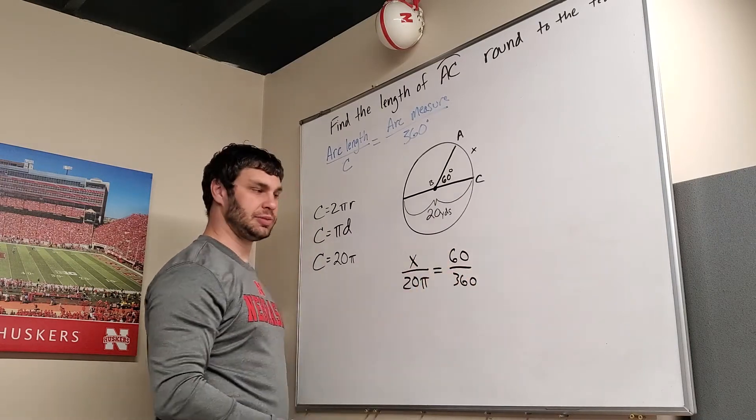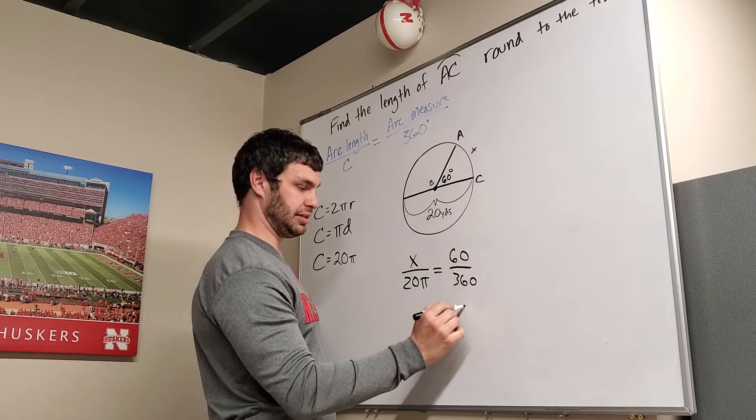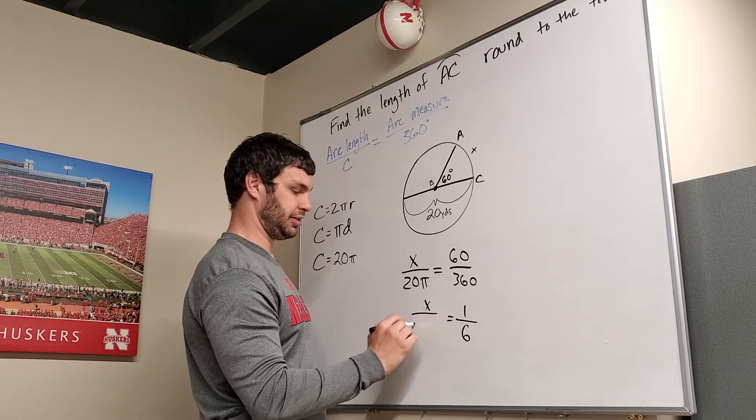I want to simplify this as much as possible. I do know that 60 goes into both of these. 60 goes into 60 once, and it goes into 360 six times. The other side stays the same, x over 20 pi.